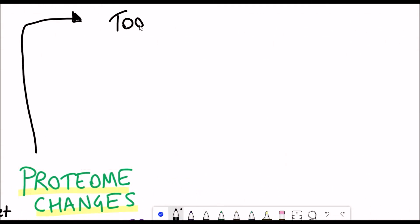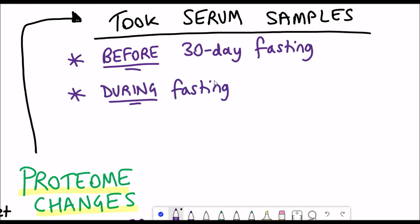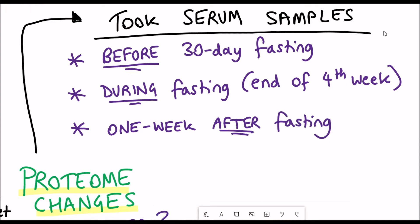To understand the biological impact of this intermittent fasting, the authors took serum samples from the blood of the different subjects. They did this before the 30-day fasting period, took another sample during the fasting at the end of the fourth week, and then took a final sample one week after the fasting period.